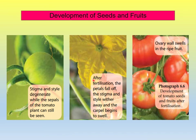After fertilization, as shown in photograph number two, the petals fall off, the stigma and the style wither away, and the carpel begins to swell. The carpel is the female reproductive organ which consists of style, stigma, ovule and ovary. Then the ovary walls swell in the ripe fruits.